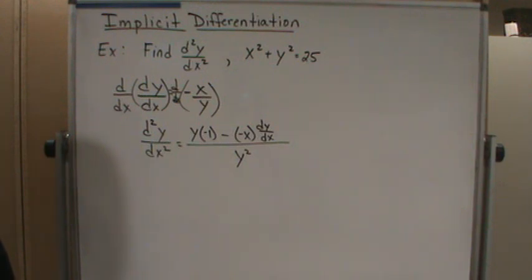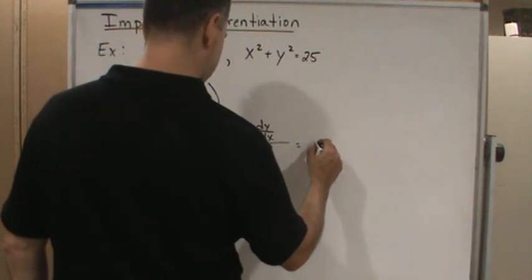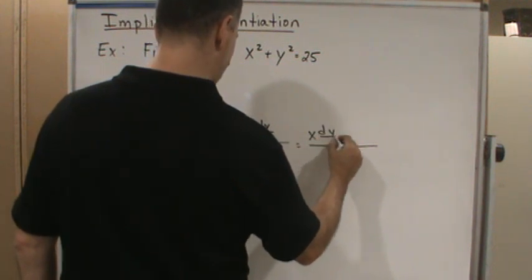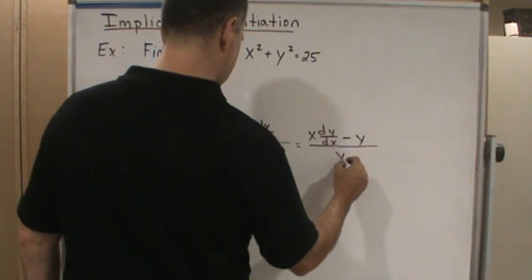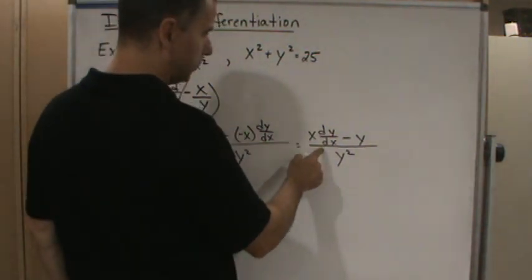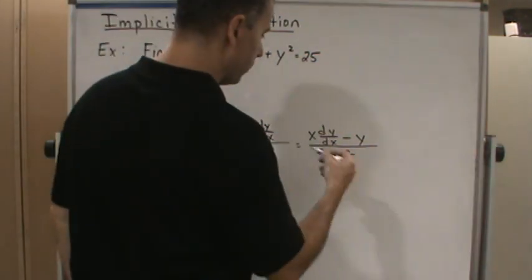Now, okay, let's simplify this. This is just going to equal x dy/dx minus y over y squared. Okay, but be careful. We would not stop here. Because guess what? We know what dy/dx is equal to. We solved that before. dy/dx is equal to negative x over y. So we can do a substitution here.